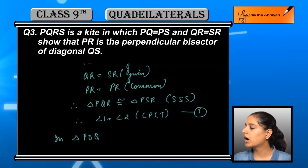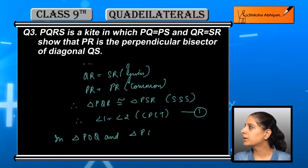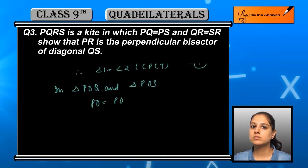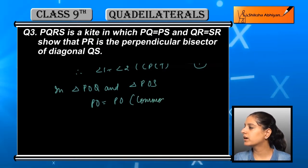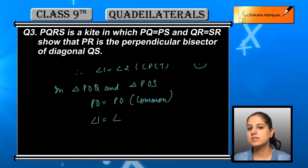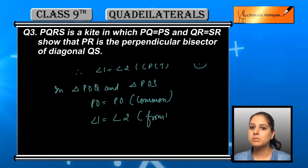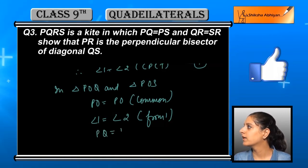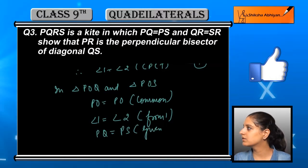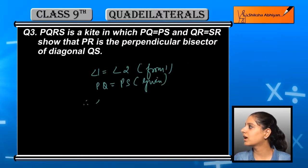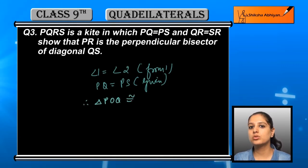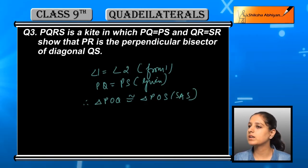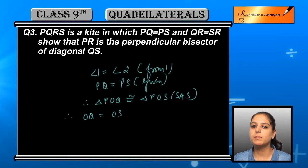Now we take another set of triangles: triangle POQ and triangle POS. In these two, PO and PO are common. Next, angle 1 is equal to angle 2 — this is by CPCT from the earlier triangles we proved. Next, PQ is equal to PS, which is given. Due to these three conditions, triangle POQ and triangle POS are congruent by the SAS congruence rule. Therefore, OQ and OS are equal to each other by CPCT.